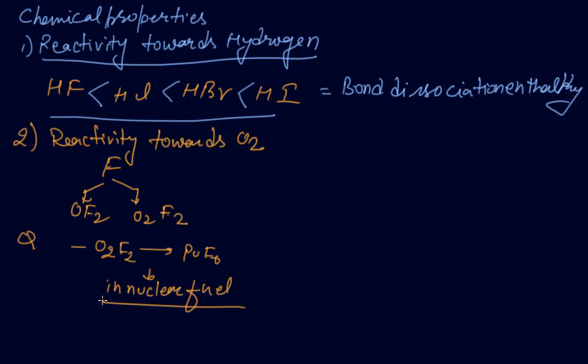Chlorine, bromine, and iodine form oxides in which the oxidation state of these halogens ranges from +1 to +7. Chlorine forms oxides like Cl2O, ClO2, and Cl2O6.